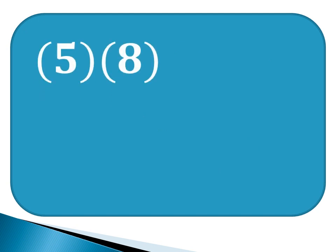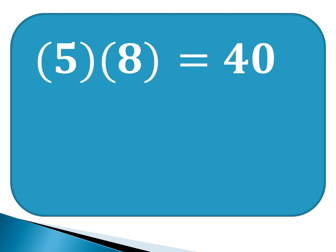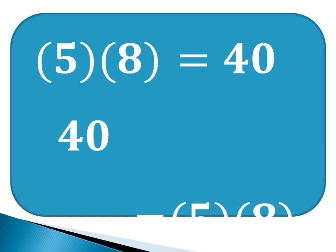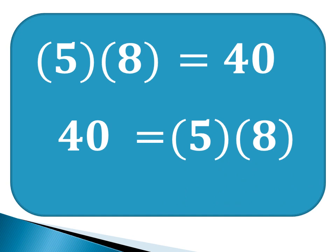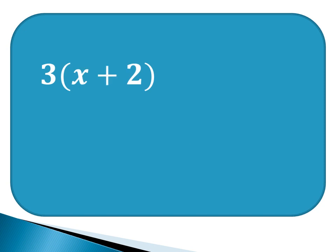Let us say we have 5 times 8. What is 5 times 8? 5 times 8 is equal to 40. 5 and 8 here are called factors. 40 is the product. But what if we are going to reverse the process? The given now is 40, and we will find out the factors of 40. The factors of 40: we have 5 times 8, also 40 times 1, and 10 times 4. Not only among numbers but also polynomials.